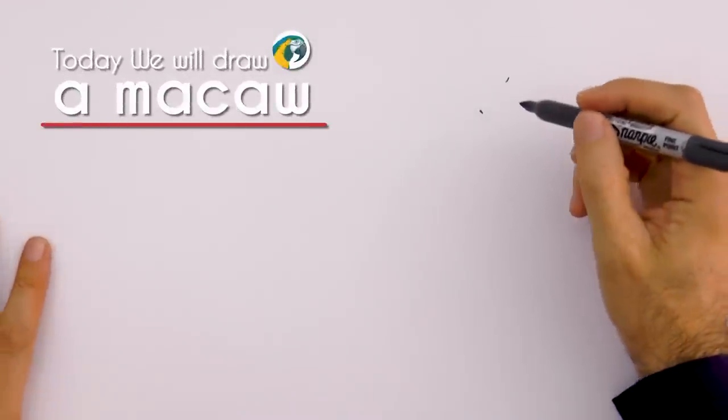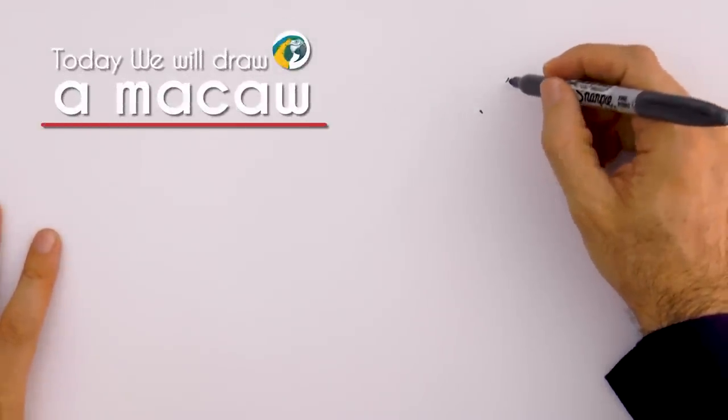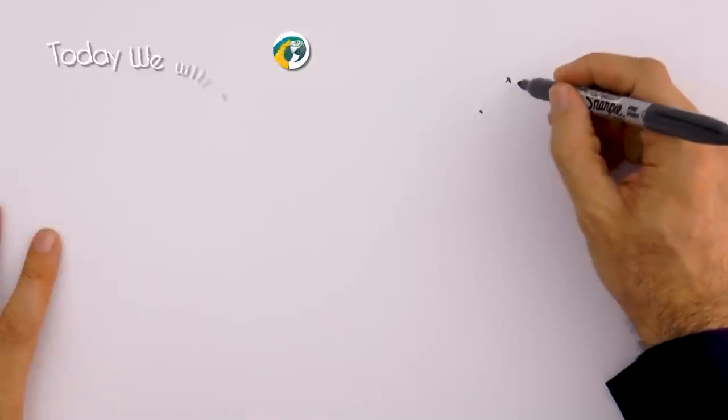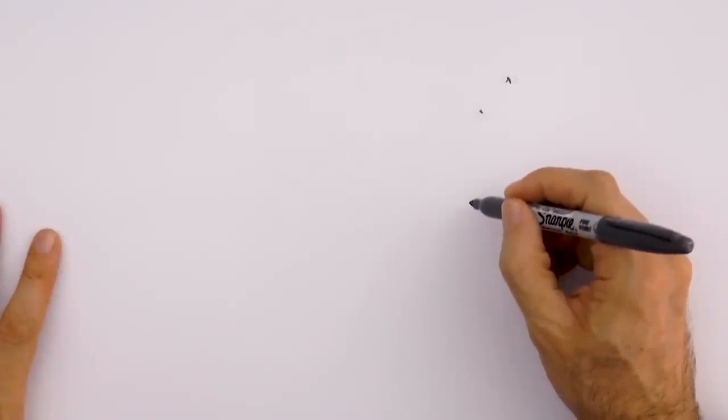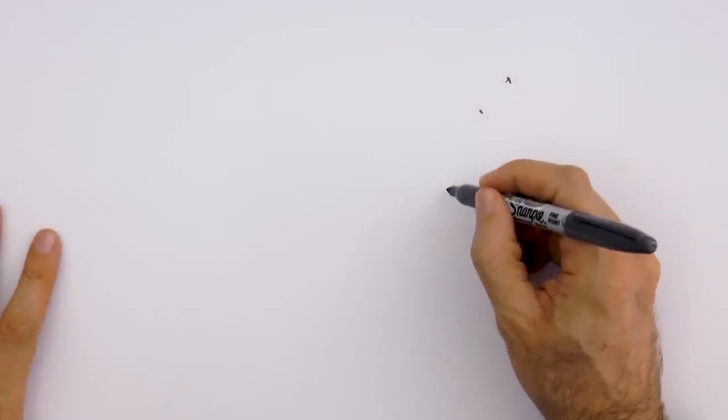I'll begin marking where the beak begins and ends, this is the width and then we'll curve and arrive, the tip will be over here.